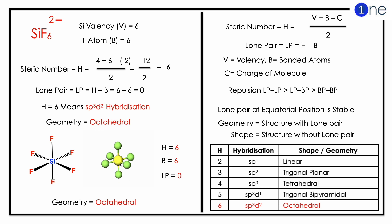If you substitute into the H formula, you have 4 plus 6 minus negative 2, which gives 12 divided by 2 equals 6. Lone pair will be H minus B, which is 6 minus 6 equals 0. So H equals 6 means sp3d2 hybridization without lone pair.